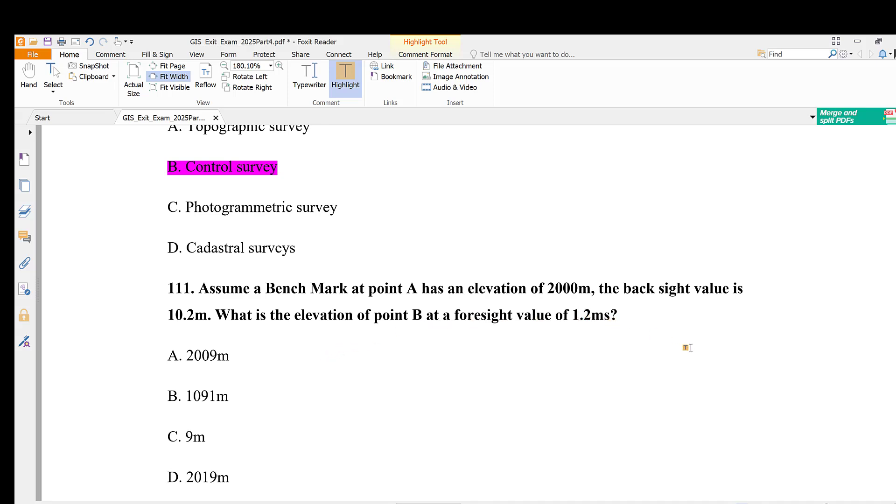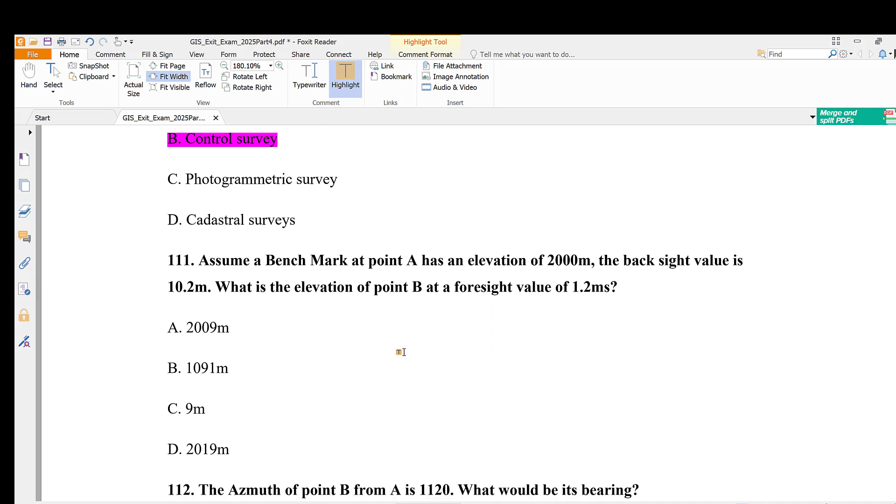Question 111: Assume a benchmark at point A has an elevation of 2000 meters. The backsight value is 10.2 meters. What is the elevation of point B if the foresight value is 1.2 meters? When you calculate it, it becomes 2009 meters.